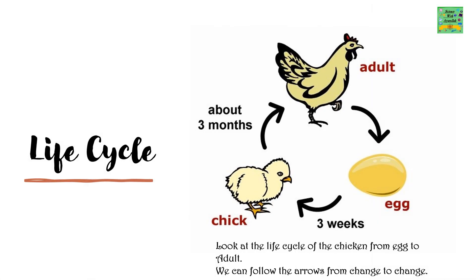Life Cycle. An adult gives an egg. The egg turns into a chick, and the chick after about 3 months turns into an adult.